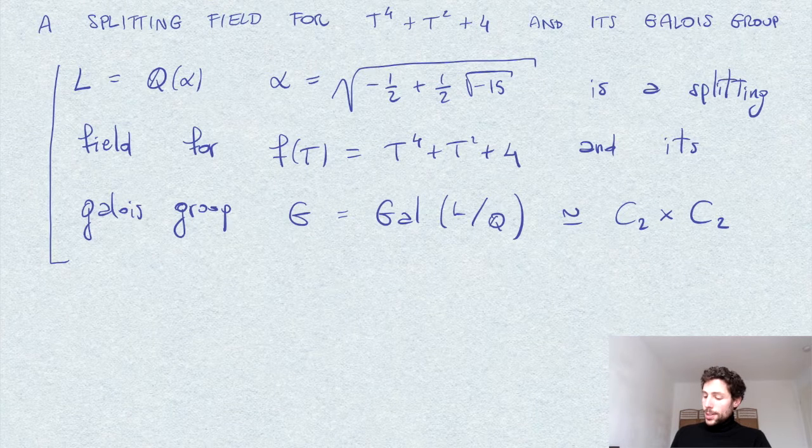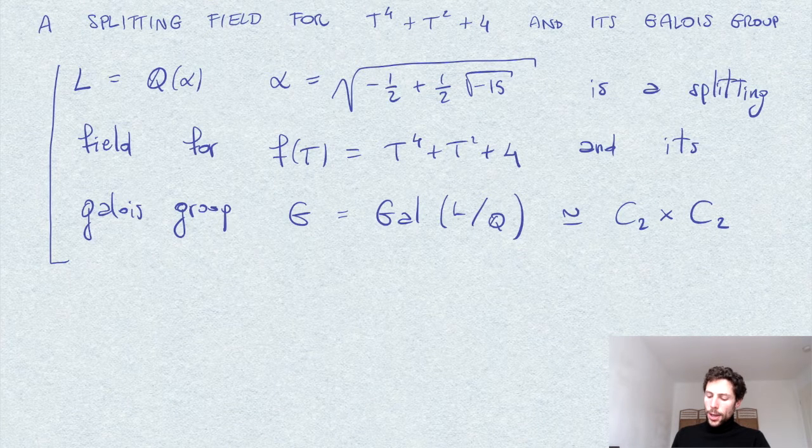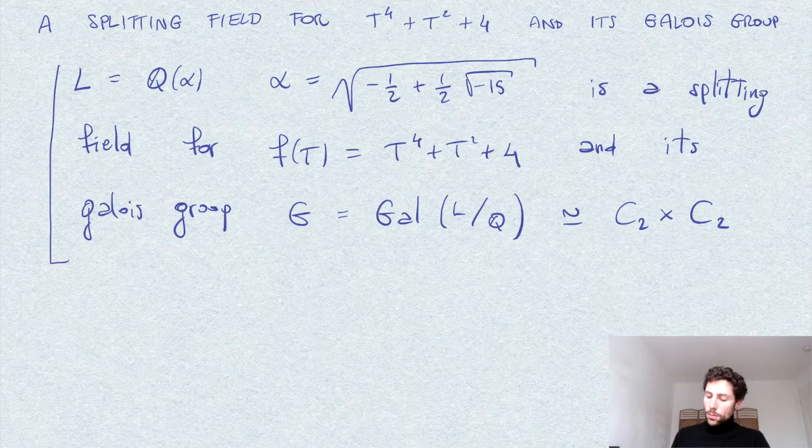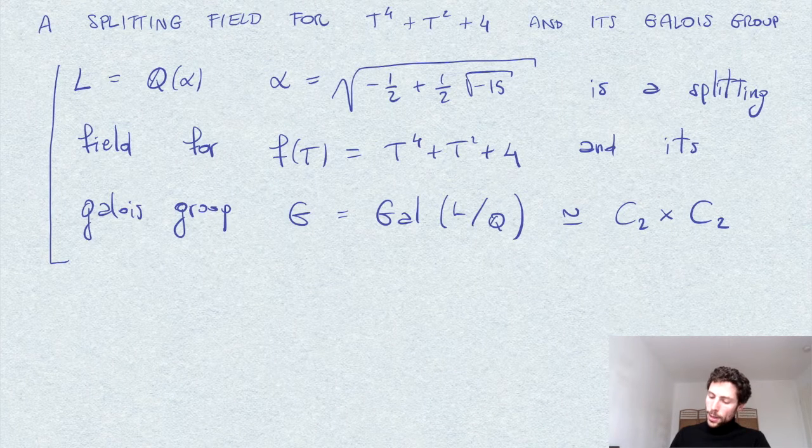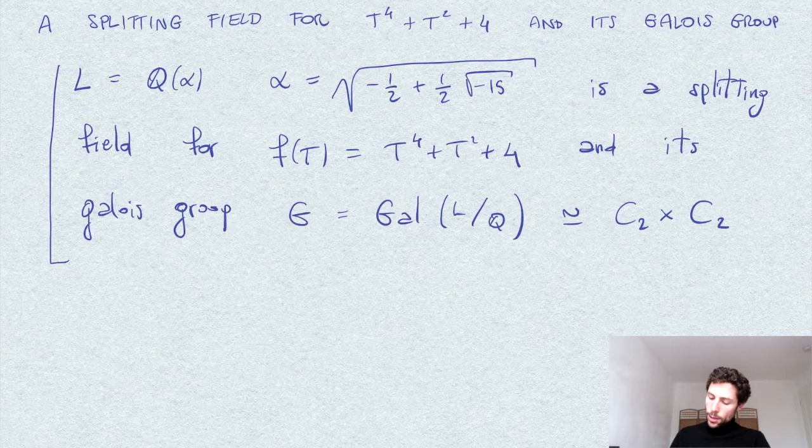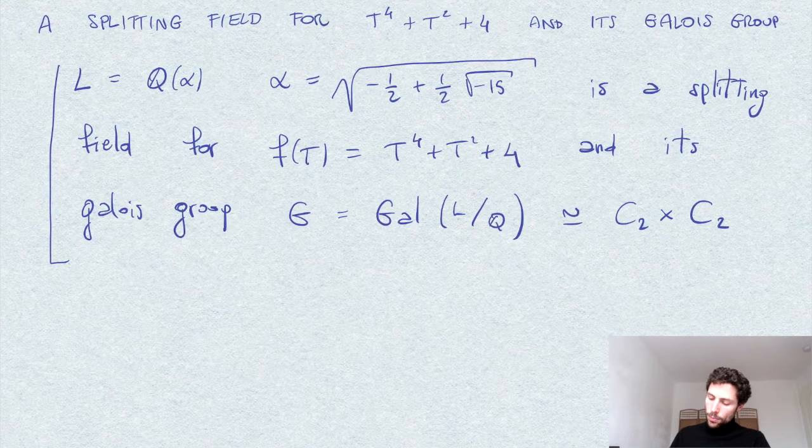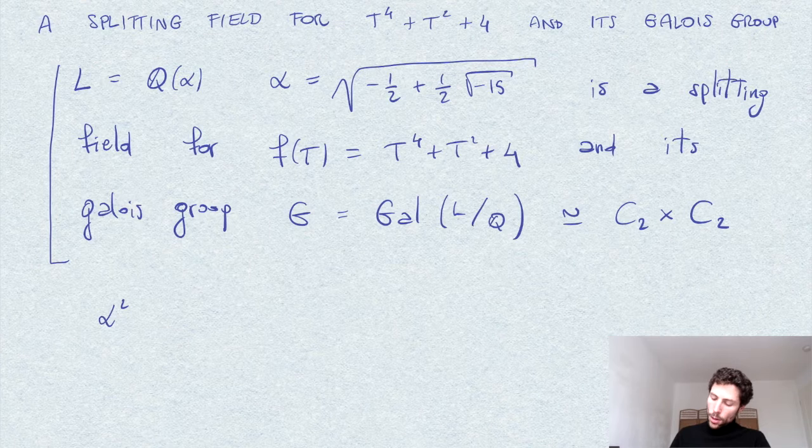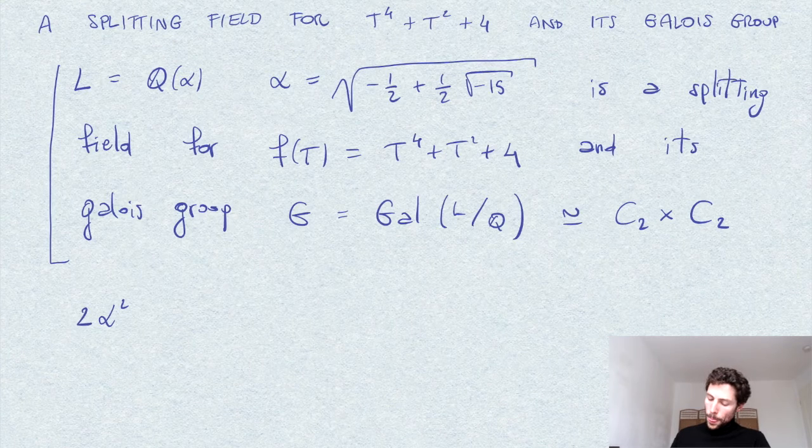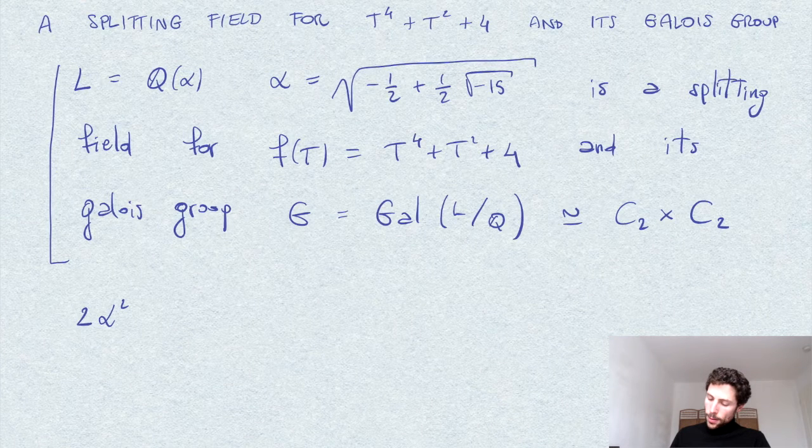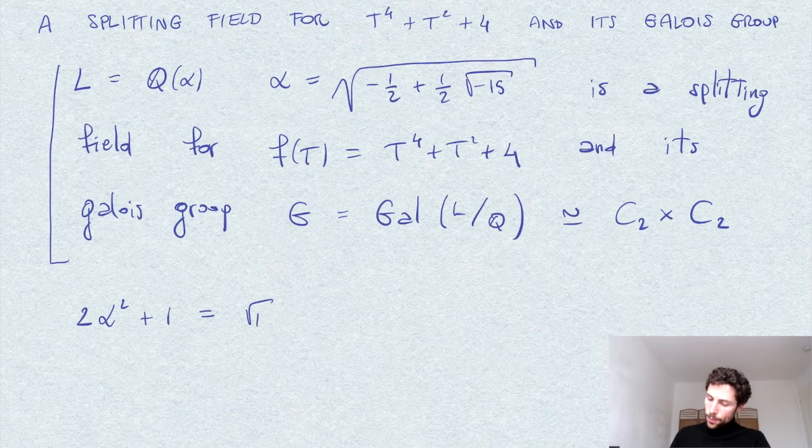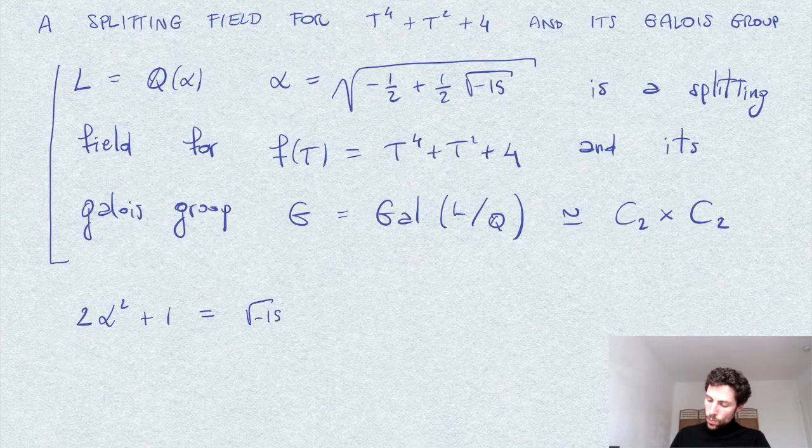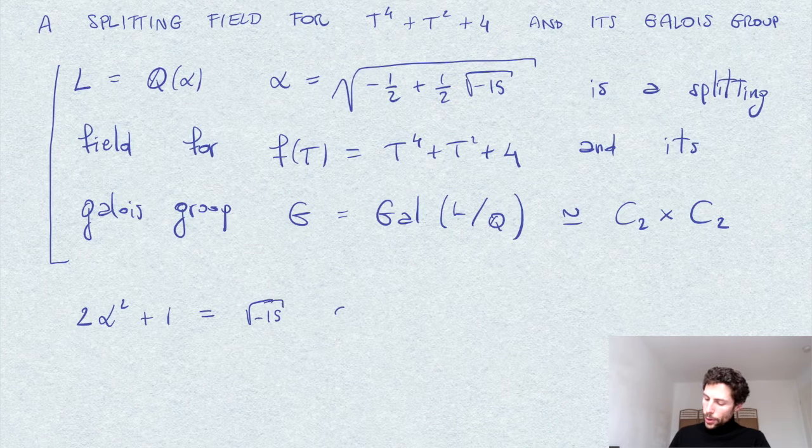I will use essentially the same argument as in the previous exercise. So why is this the splitting field? By taking the definition of alpha here, if I square it and I multiply by 2, I get this identity, which I square again.